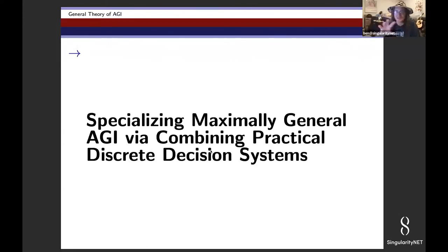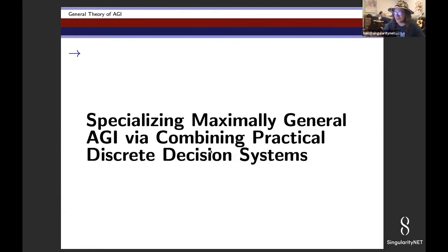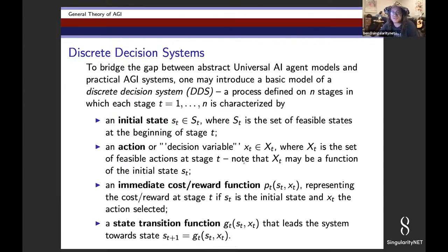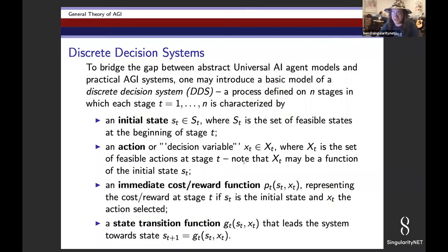What I'm going to talk about is basically specializing maximally general AGI by a series of mathematical and conceptual steps, beginning with something called discrete decision systems. A discrete decision system is something very abstract and boring, but I think it's a critical building block in assembling practical AGI systems, as well as a way of thinking about impractical AGI systems.